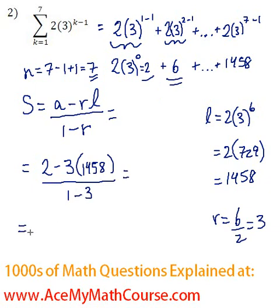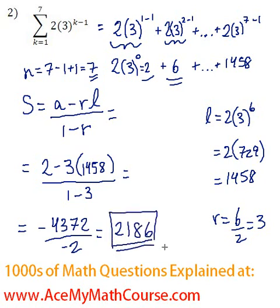So I am just going to quickly work that out on my calculator. So 2 minus 3 times 1458. It's just going to work out to be negative 4,372. And we are dividing that by negative 2 of course. So the sum works out to be 2186. That is the sum of our series.